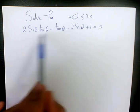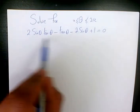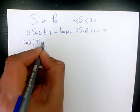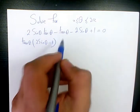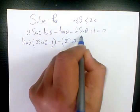First thing I want to do is factoring, factor by grouping. For the first two terms I'm going to factor out tan(θ), so it's going to be tan(θ)(2sin(θ) - 1). And for the last two terms I'm going to factor to get -(2sin(θ) - 1) = 0.